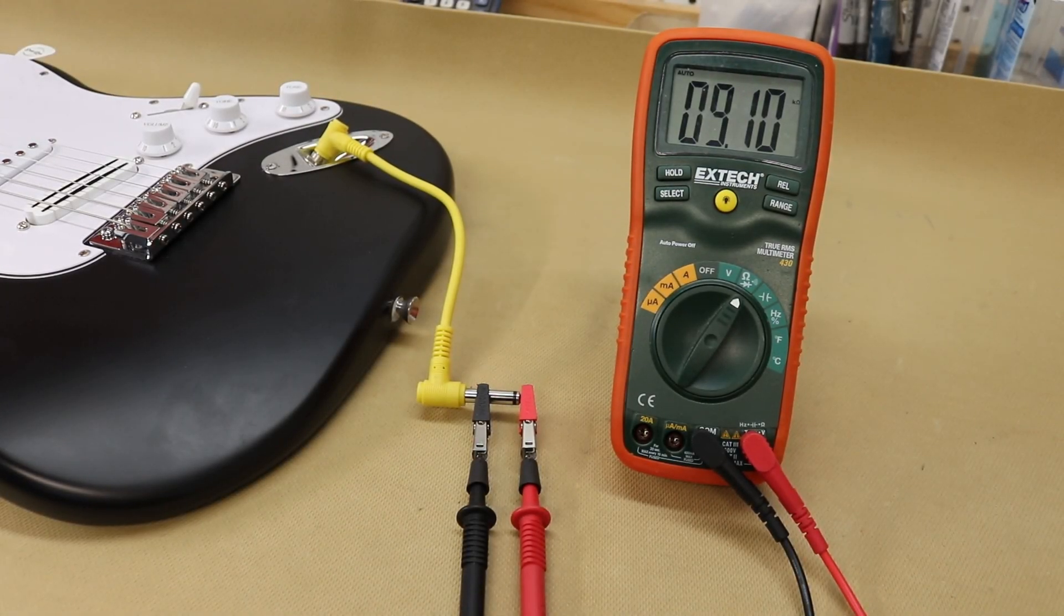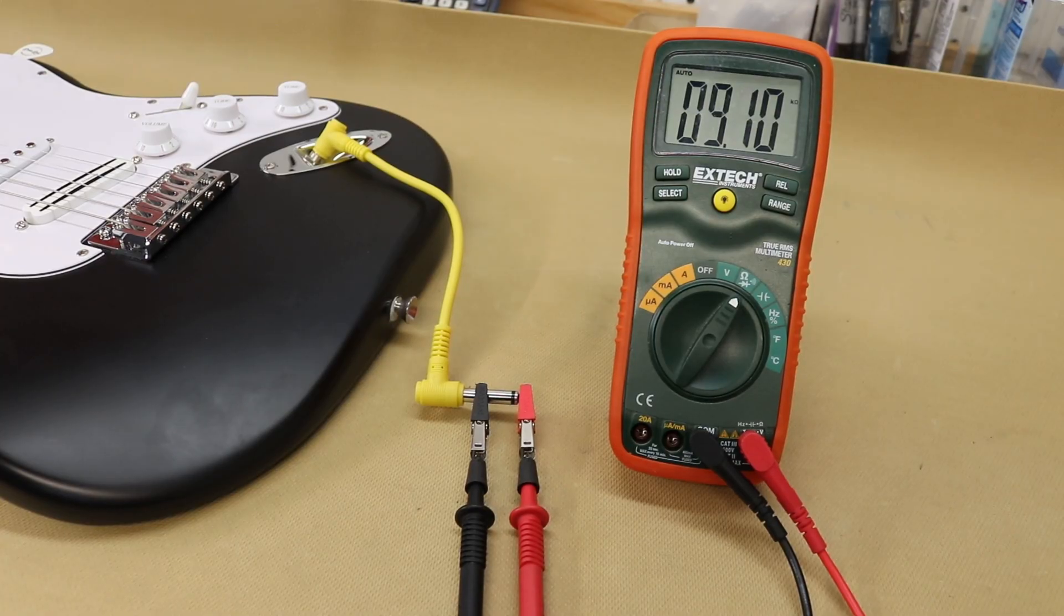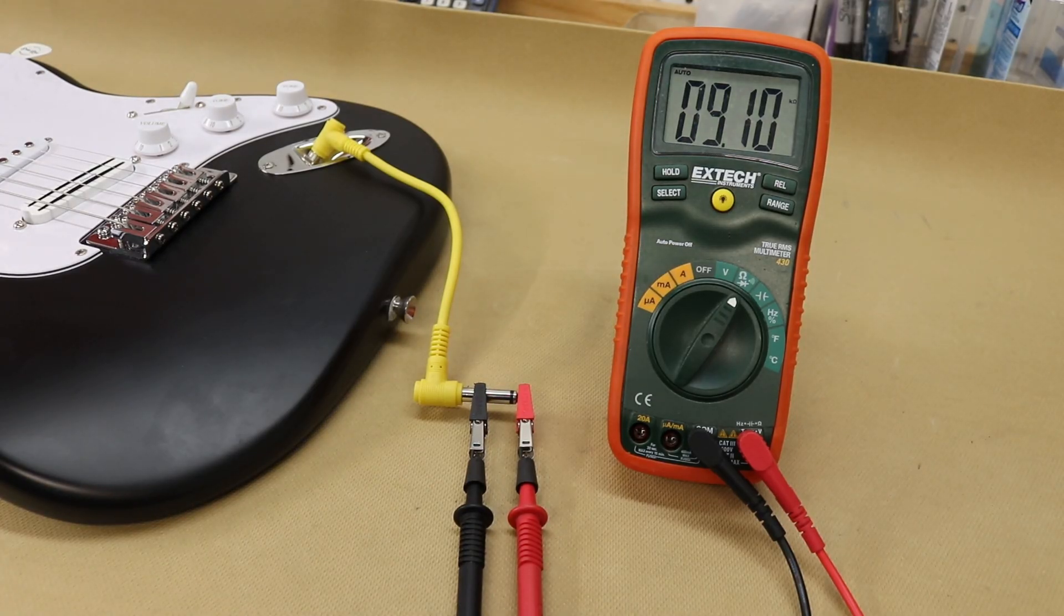Another way to achieve this is to connect your probes to the end of a guitar cable. You take the black probe and connect it to the ground, and the red probe connected to the tip, and this will give you a reading as well.